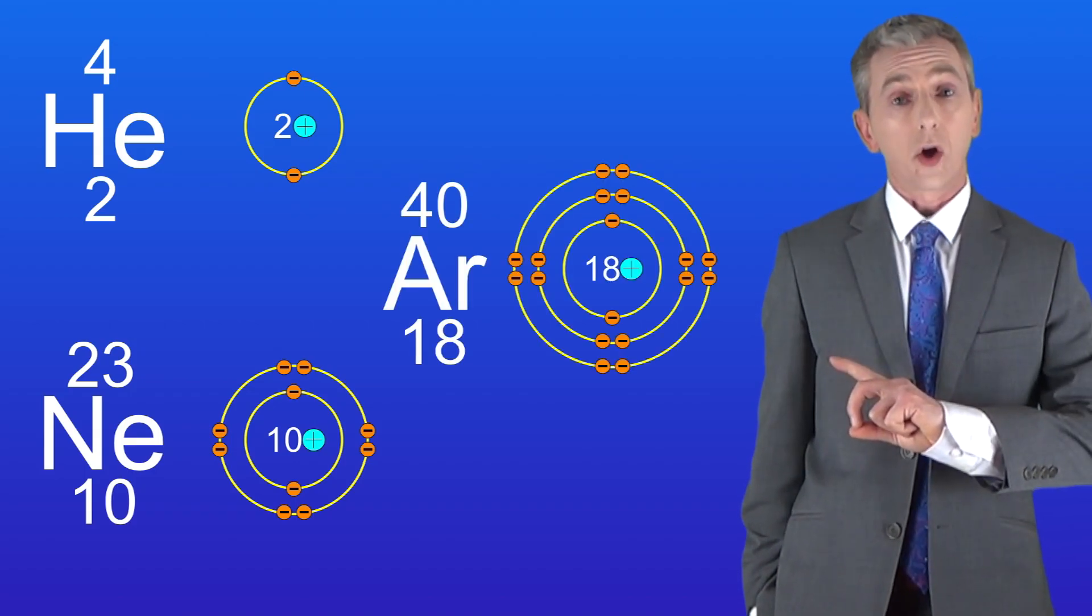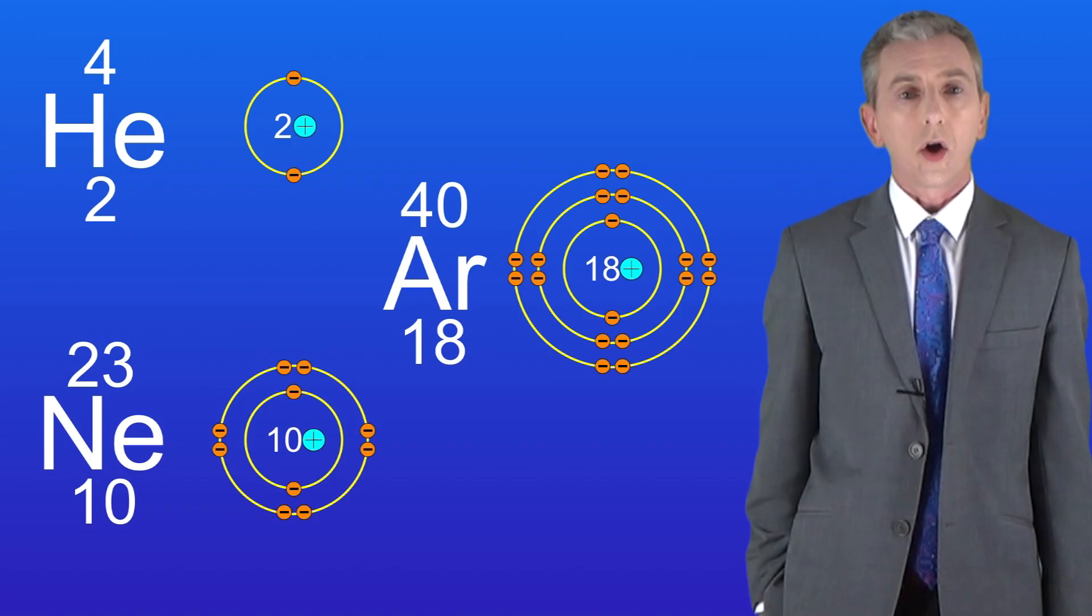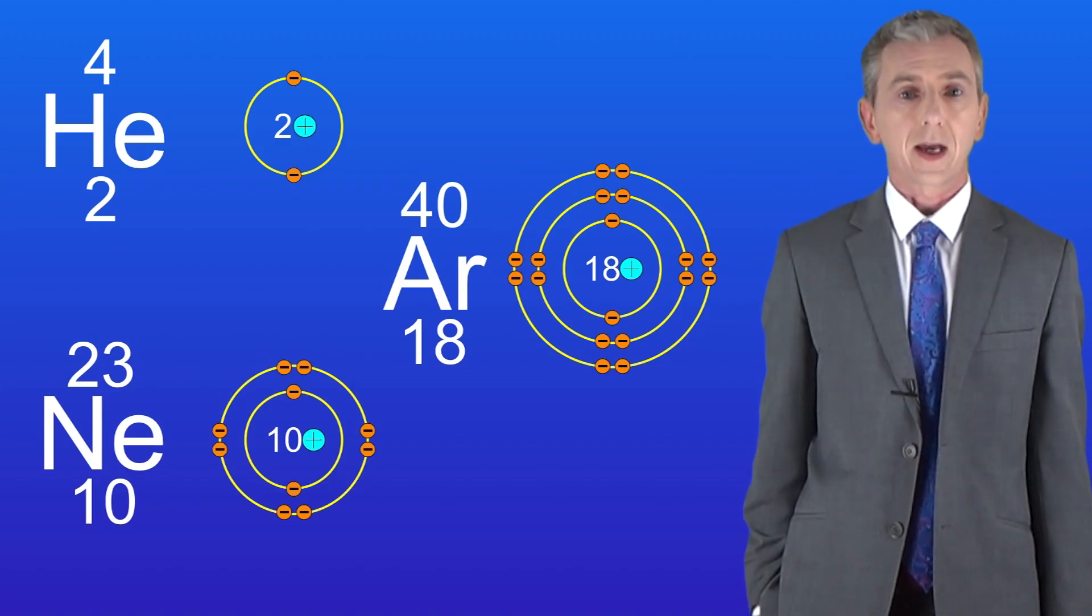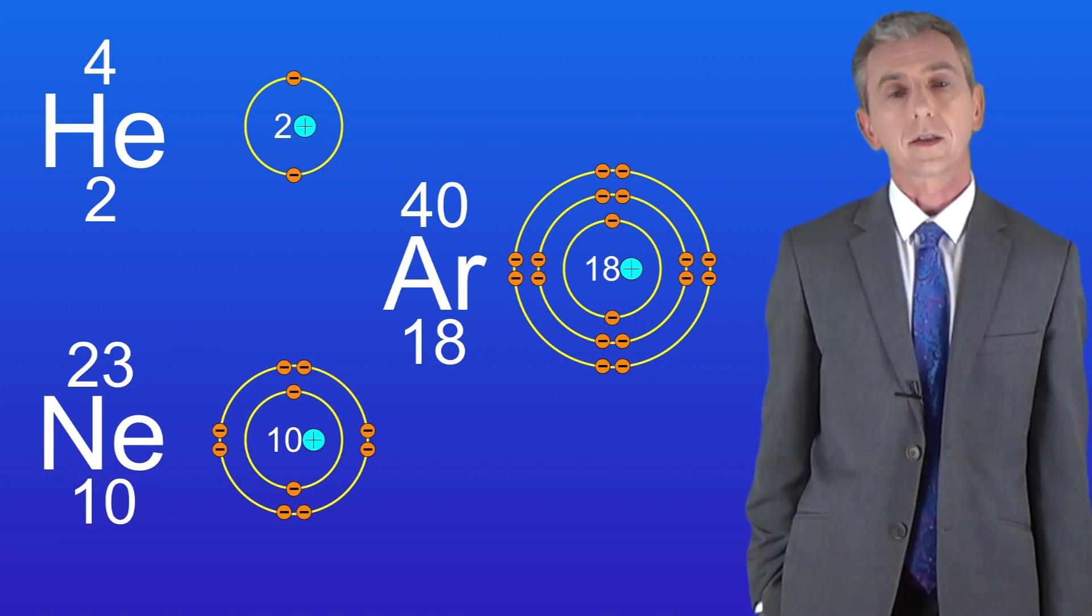Here's the structure of the noble gas argon. Again you can see that argon has eight electrons in its outer energy level. So again because it's got a full outer energy level argon is unreactive.